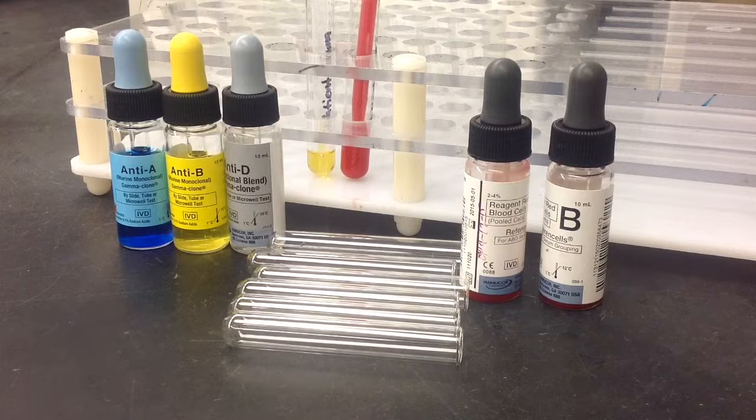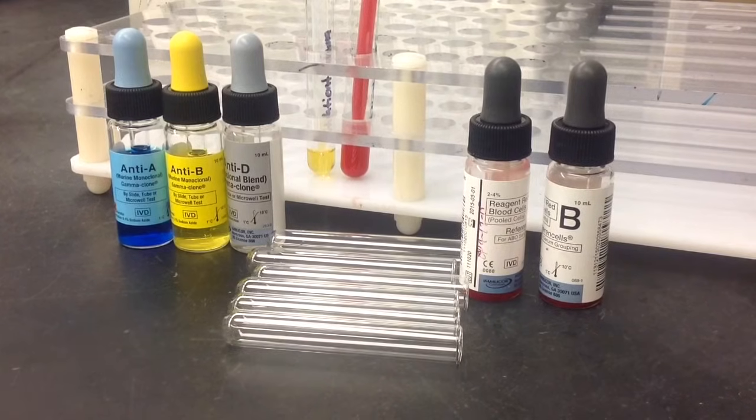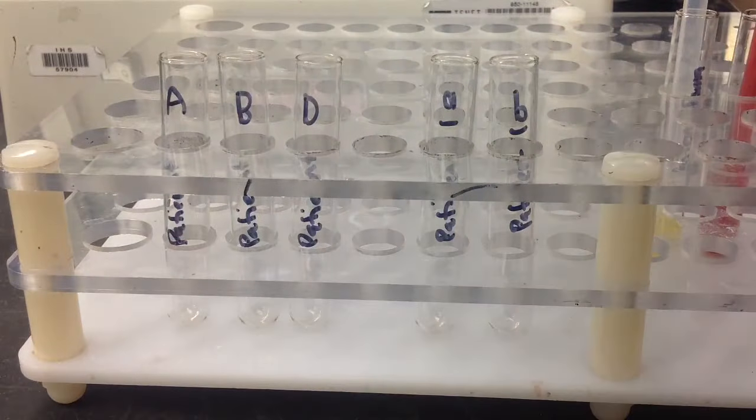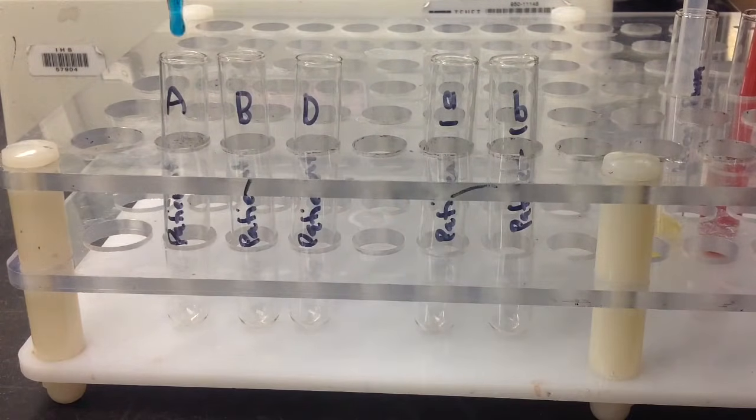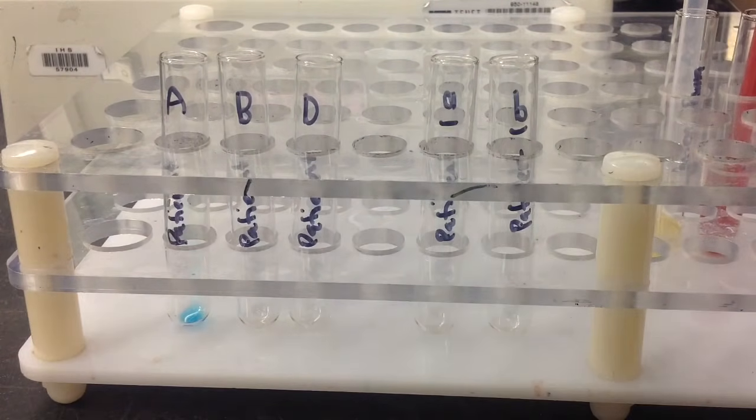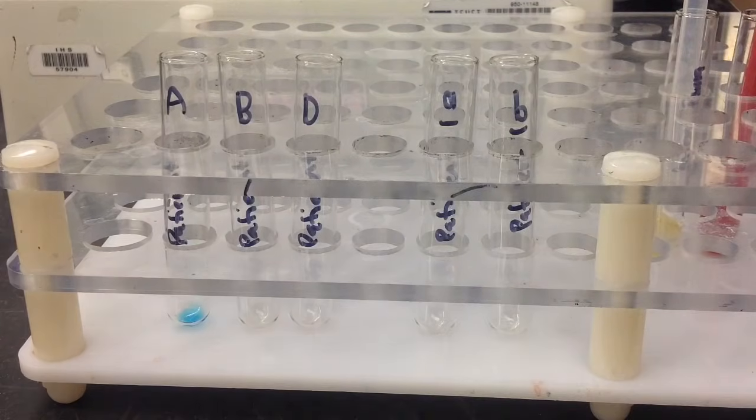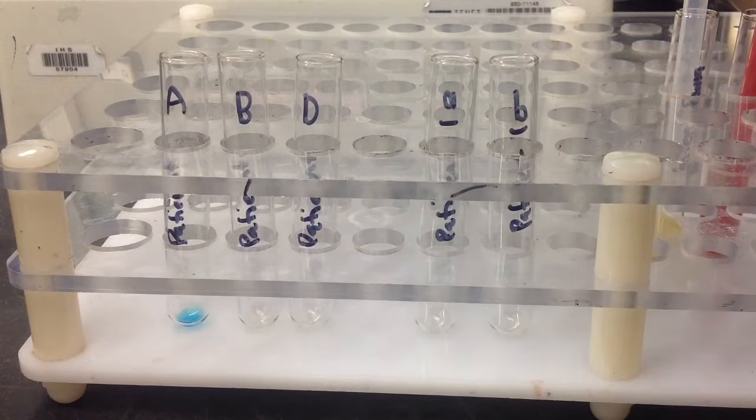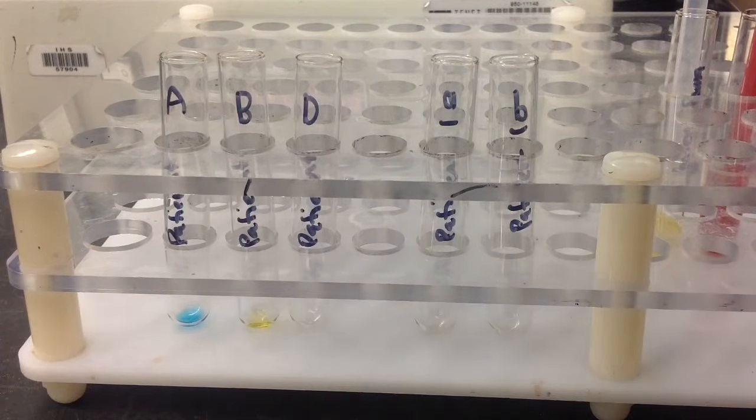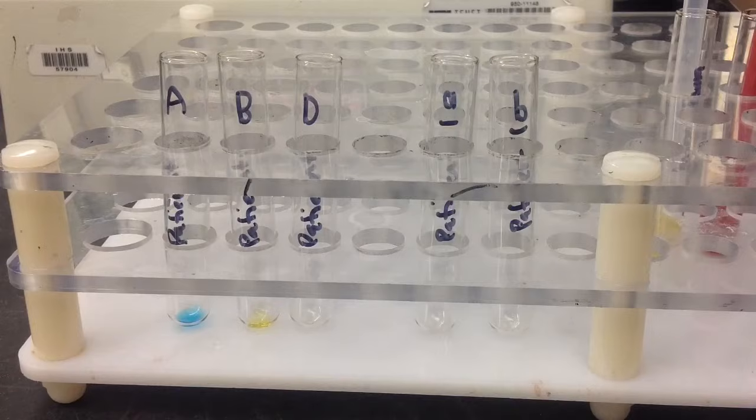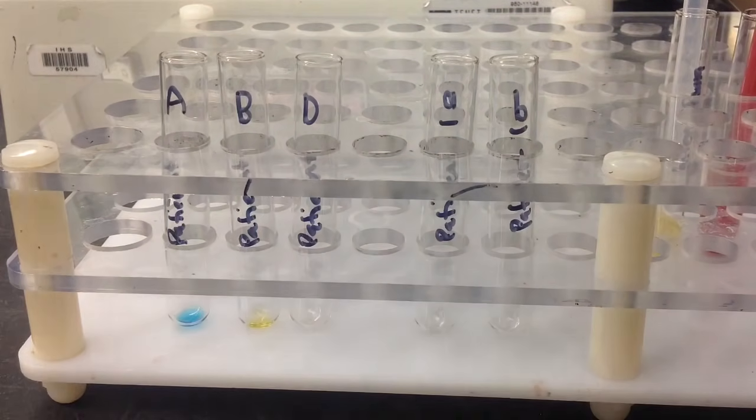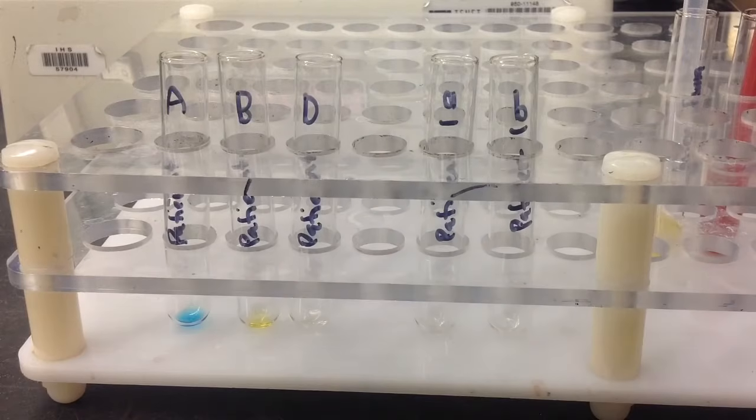Alright, once you have all your stuff together, you can go ahead and start to label all of your tubes. And then from there, we're going to start with the forward. We're going to add 1 drop of all of these reagents. So 1 drop of each anti-sera into the appropriate tube, so that was the A. Then you add the anti-B. And then lastly for the forward is the anti-D anti-sera. Remember, just 1 drop for each of these.